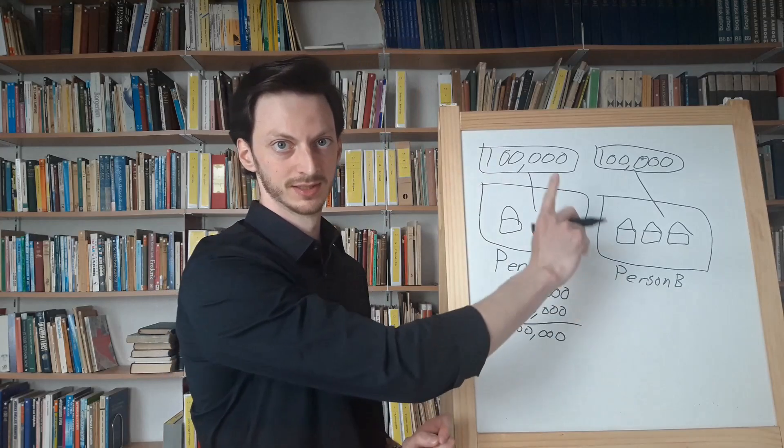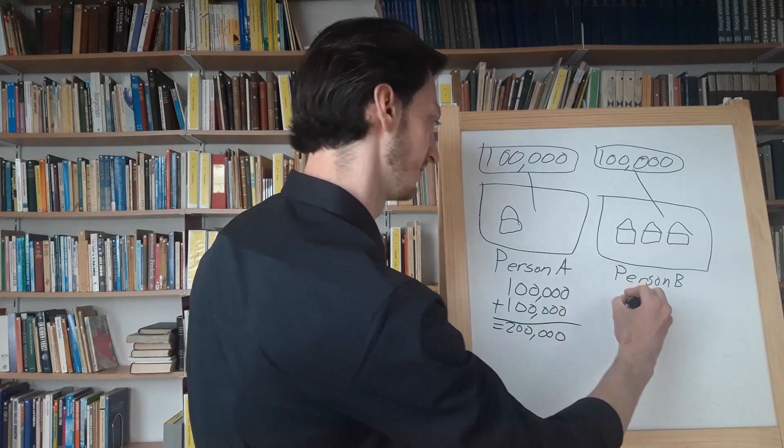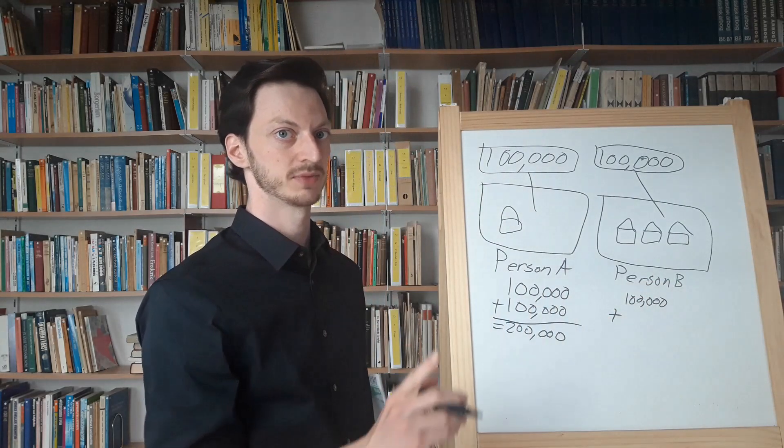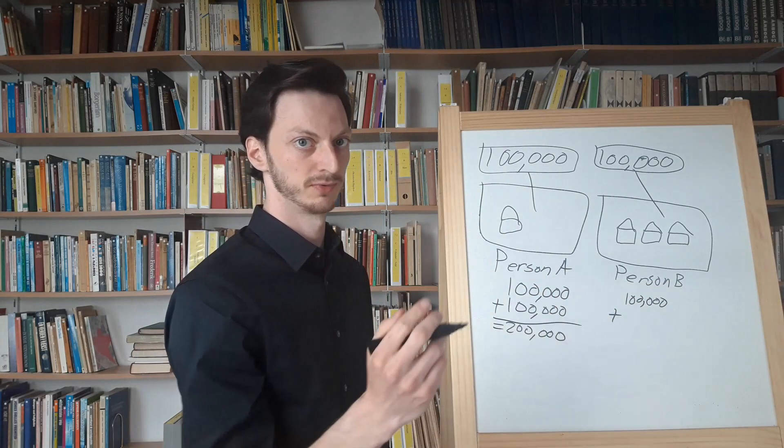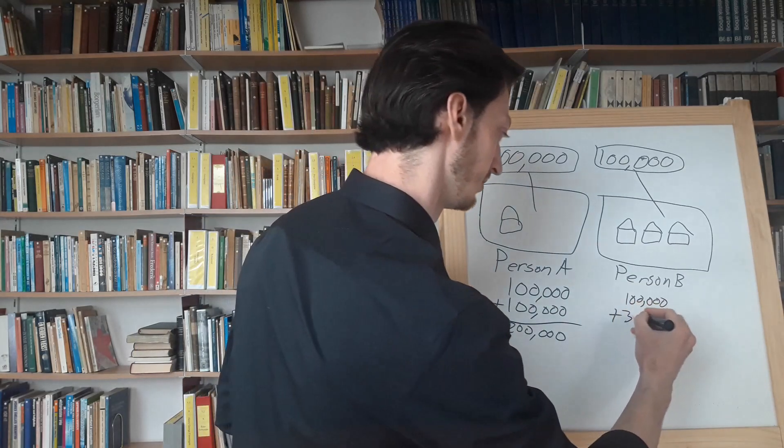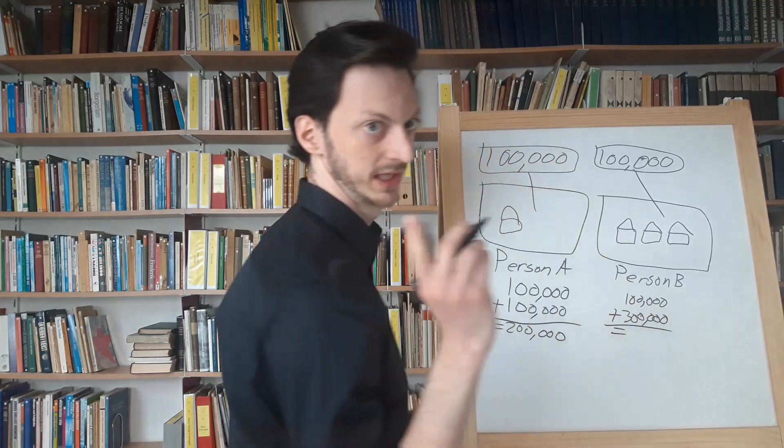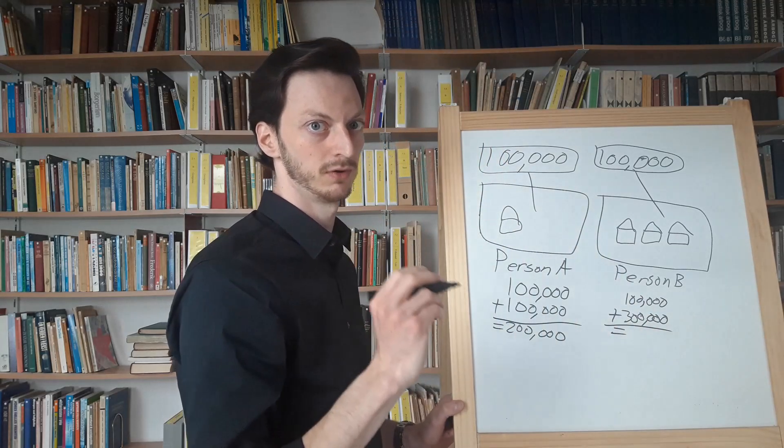For Person B, same land, same value. However, three times the number of houses, so three times the value. Giving him a total property value of 400,000.